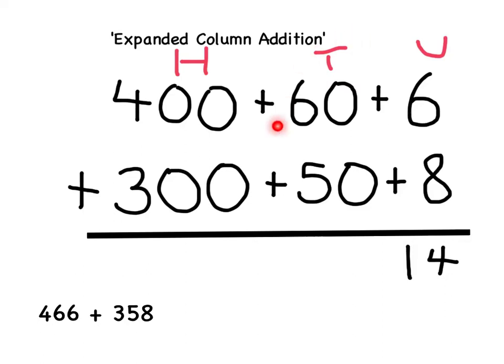In the next column, our tens, we've got 60 add 50. 60 add 50 gives us 110.